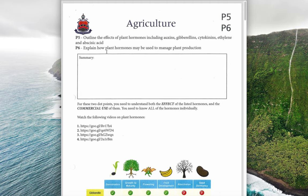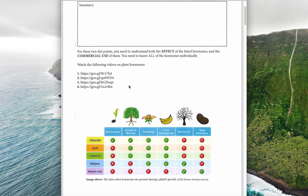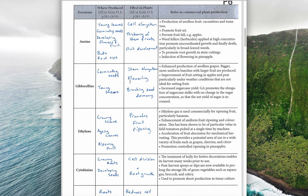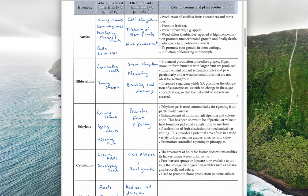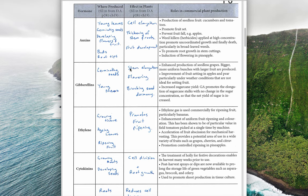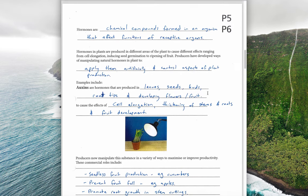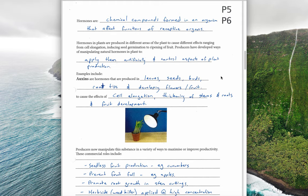The second dot point is about how we use hormones to manage plant production. You should watch the four videos linked here, as they explain how each hormone works in detail. To summarize, the table shown gives a summary of where they're produced, the effect in plants, and how we use them commercially.